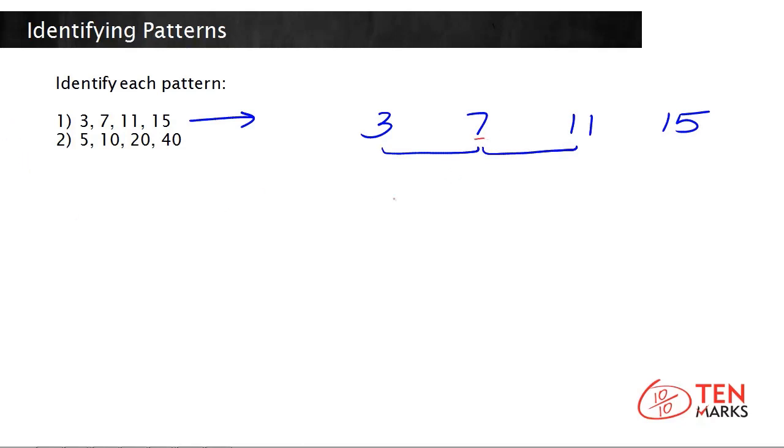So, 7 is 4 more than 3. And let's see if this rule holds true for the next two numbers. Comparing 7 and 11, 11 is 4 more than 7.